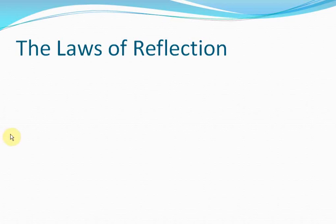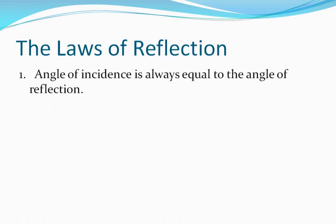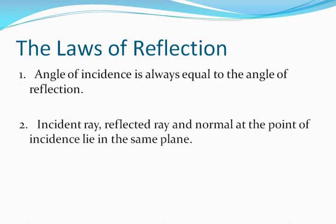The first thing we need to study is the laws of reflection — how is reflection taking place? There are two laws of reflection. The first is that the angle of incidence is always equal to the angle of reflection. The second law is that the incident ray, reflected ray, and normal at the point of incidence lie in the same plane.